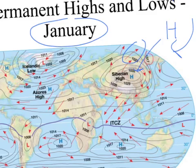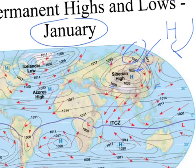These gray lines are isobars. Here we have 1017 millibars, and going closer to this high, 1020 millibars, then 1023 millibars — increasing by increments of 3 millibars. Maps showing isobars use different increments depending on the pressure gradient that is in place.